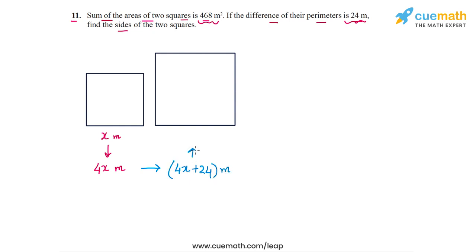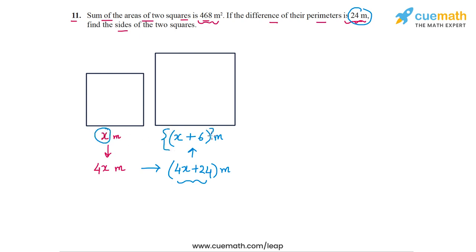From this, we can say the side of the larger square will be its perimeter 4x plus 24 divided by 4, which gives x plus 6. So the side of the larger square is x plus 6 meters. From the fact that the difference of the perimeters is 24 meters, we've concluded that if the smaller square has side length x, the larger square has side length x plus 6. This difference of 6 in side length translates to a difference of 24 meters in perimeter.